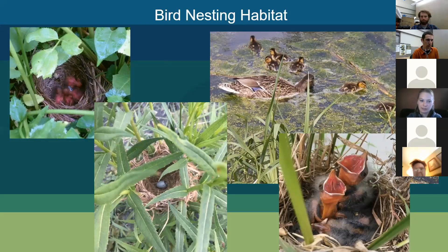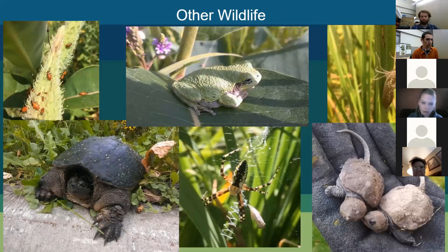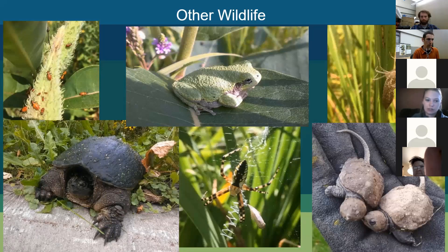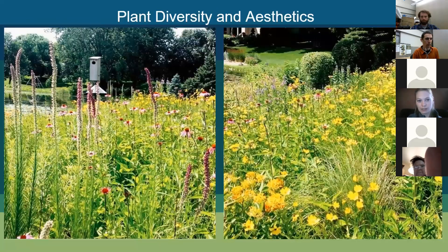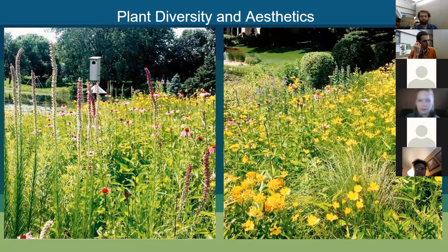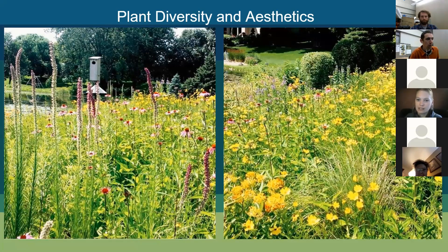On a daily basis in restorations you find frogs, turtles, various insects, and arachnids. The list of different species found would be very long. When you add a lot of diversity, these restorations can be aesthetically pleasing — just as much as or more than a rose garden or hostas — with so many different colors and shapes available depending on the flowers you add to your list.